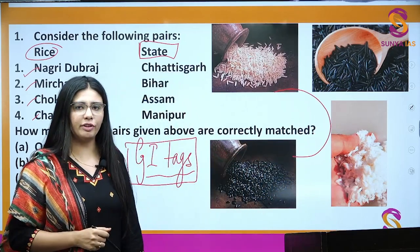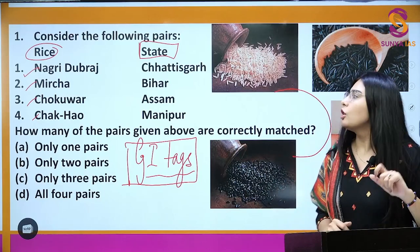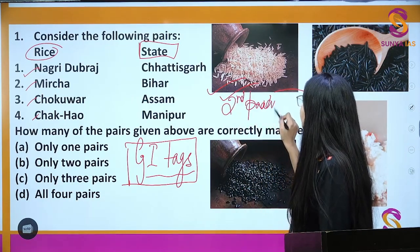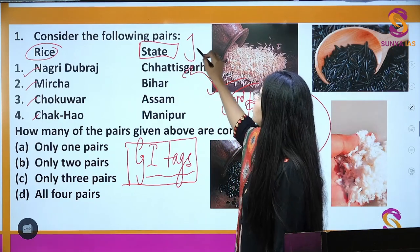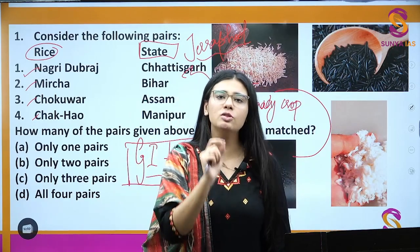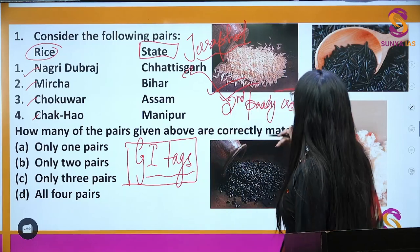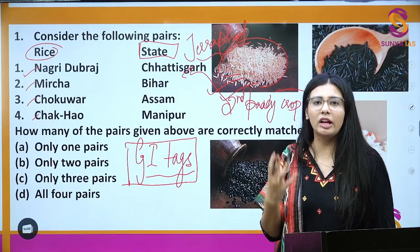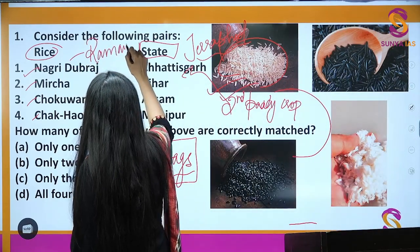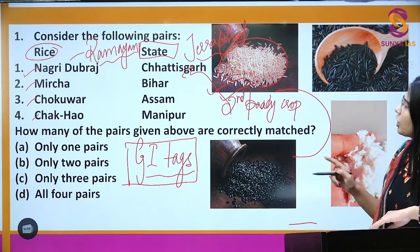The first rice is Nagari Dubraj, which belongs to the state of Chhattisgarh. It is the second paddy crop to get the GI tag in Chhattisgarh — the first being Jeera Phool. Nagari Dubraj is an indigenous variety; it is non-sticky but very fragrant. It also has a special mention in the Ramayana. So it got the GI tag in Chhattisgarh due to these qualities.